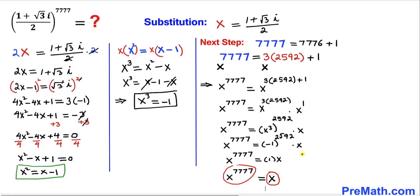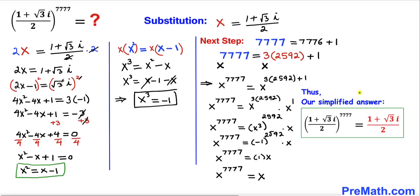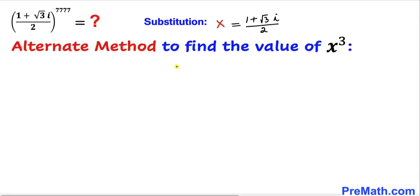We know our x value is (1 + √3·i) / 2, so replacing x with that value, our simplified answer is (1 + √3·i) / 2. Now let me show you an alternate method to find the value of x³.